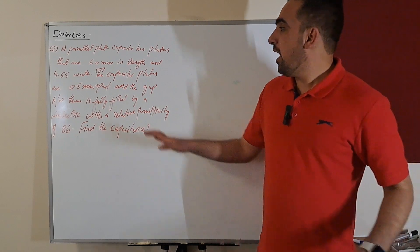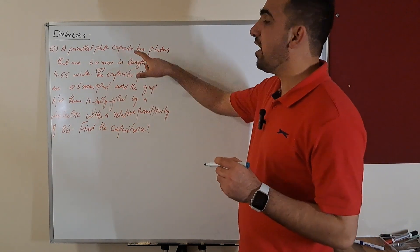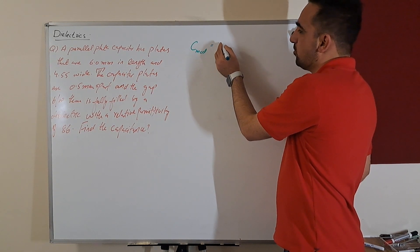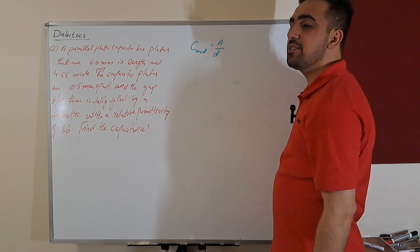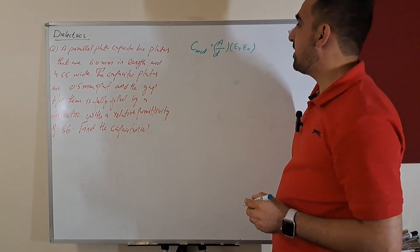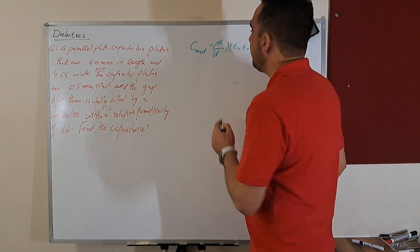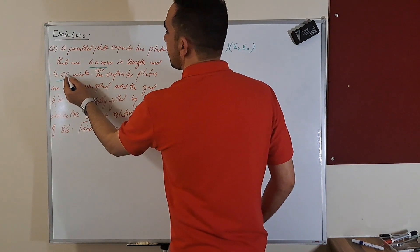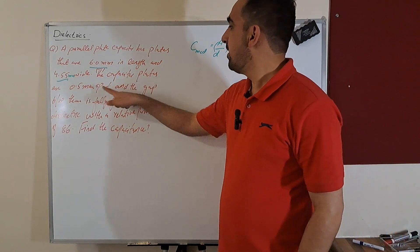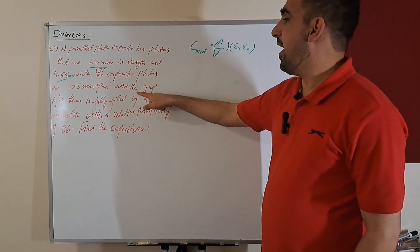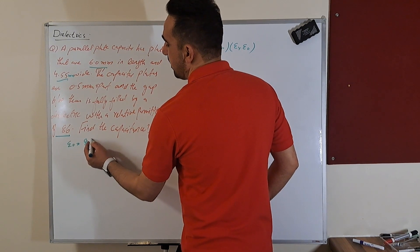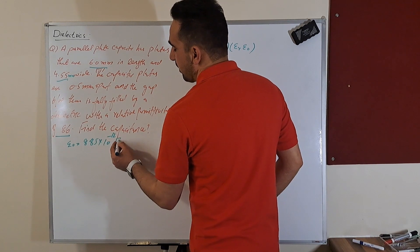Because we have a capacitor with a dielectric between the plates, we use the capacitor formula with a dielectric. Capacitance with a medium is equal to the area of the plates divided by the distance between the plates, multiplied by relative permittivity and the permittivity of free space. We have the length and width in millimeters to get the area, and the plates are 0.5 mm apart. The permittivity of free space is 8.85 times 10 to the power minus 12 per meter.